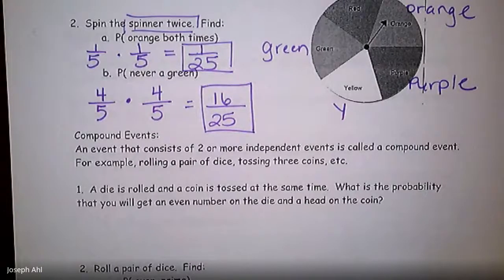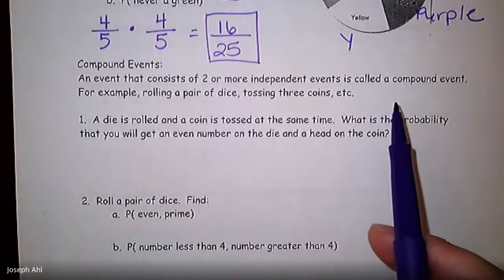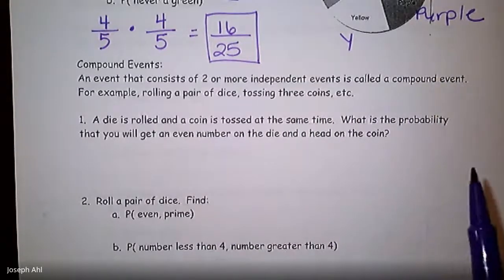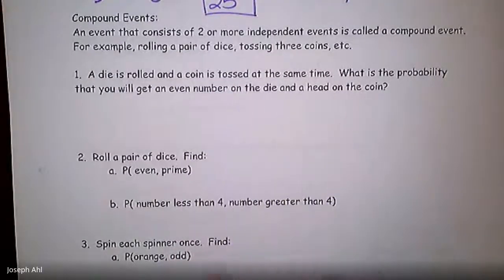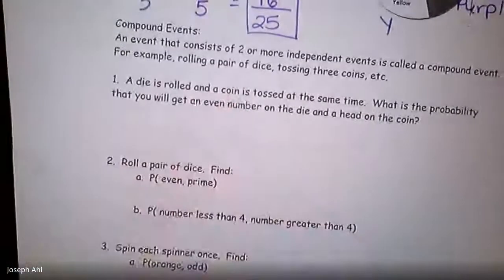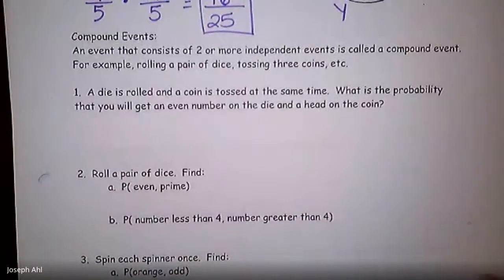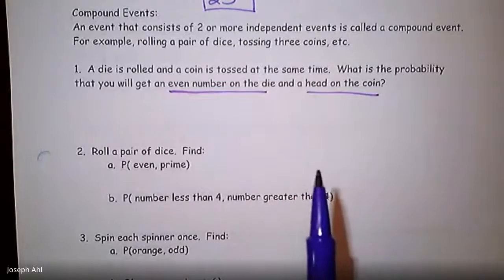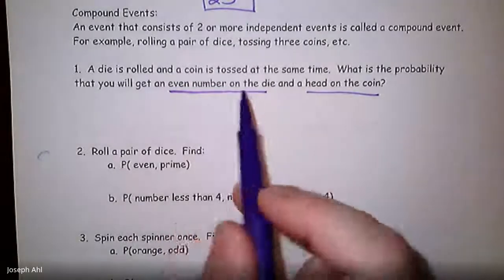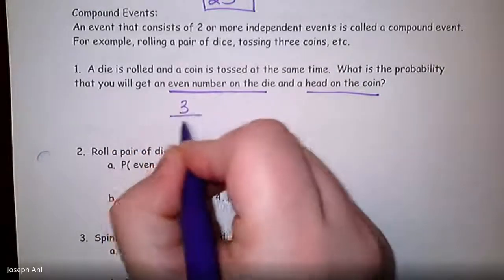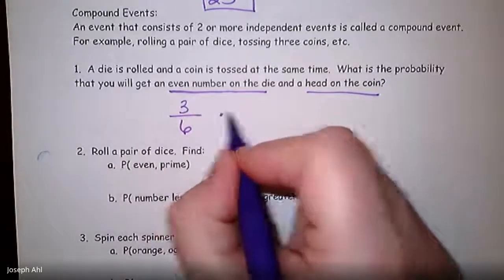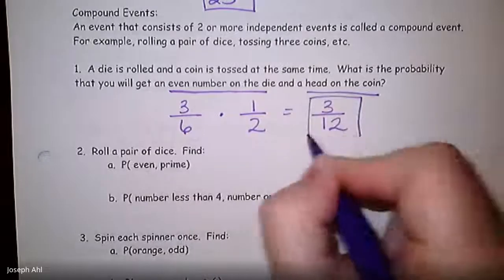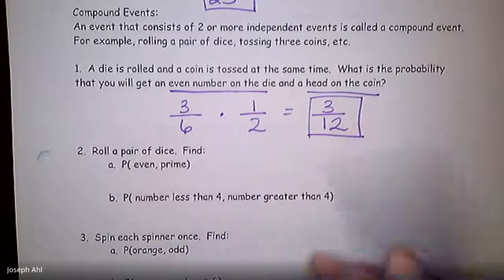Moving on to what are called compound events — an event that consists of two or more independent events. We might be rolling a pair of dice, or tossing a coin three times, or combining different ideas. For example, a die is rolled and a coin is tossed. Whatever happens on the die would not affect at all what happens on the coin, so since those events are independent, we can multiply those probabilities together. What is the probability of getting an even number on the die and a head on the coin? Getting an even number on the die is three out of six. Getting heads on the coin is one out of two. Multiply across the top and bottom to get three out of 12.